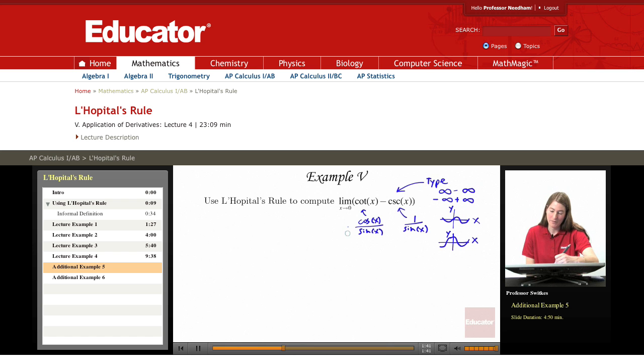we could have an infinity minus infinity or a negative infinity plus infinity type of form. Both of these types are indeterminate because we don't know which big result is larger than the other.